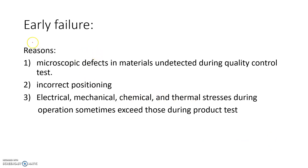First, consider early failure. Just after implementing a new product in a practical scenario, it may go to failure. One reason is microscopic defects in the material or product which are undetected during quality control testing. Most products pass through quality control before reaching the market, but microscopic defects may go undetected, and if that defective product is implemented, it may burn out or fail shortly after.